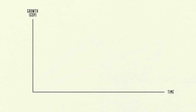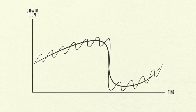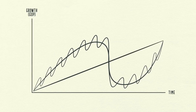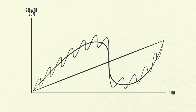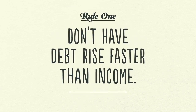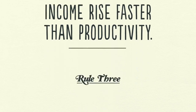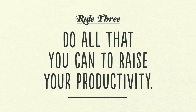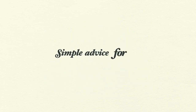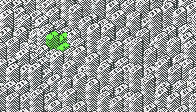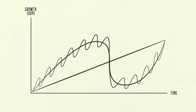In closing, the economy is a little more complicated than this template suggests. However, laying the short-term debt cycle on top of the long-term debt cycle, and then laying both of them on top of the productivity growth line, gives a reasonably good template for seeing where we've been, where we are now, and where we're probably headed. In summary, there are three rules of thumb: first, don't have debt rise faster than income, because your debt burdens will eventually crush you; second, don't have income rise faster than productivity, because you'll eventually become uncompetitive; and third, do all that you can to raise your productivity, because in the long run, that's what matters most. This is simple advice for you and for policymakers. This template has worked for me, and I hope it will work for you.